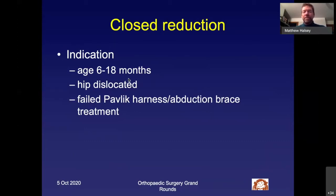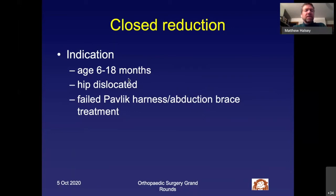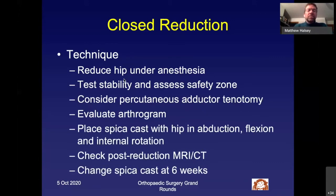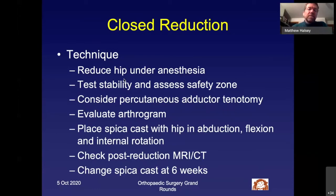Closed reduction is indicated after failed Pavlik and abduction harness treatment with a dislocated hip that is not riding too high — generally between six and 18 months of age. The technique involves reducing the hip under anesthesia, then testing stability and assessing the safe zone: the range between full abduction minus 20 degrees and the point where the hip dislocates, with the hip flexed at 90 degrees. To increase the safe zone's maximum abduction, a percutaneous adductor tenotomy can be considered.